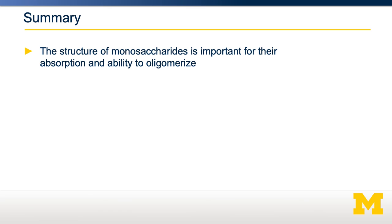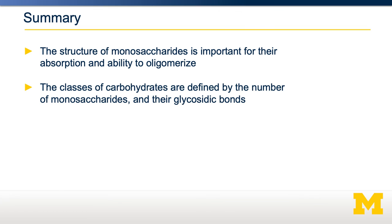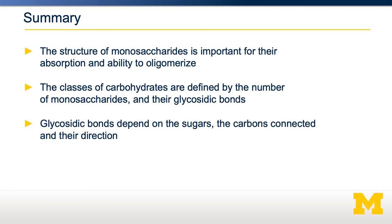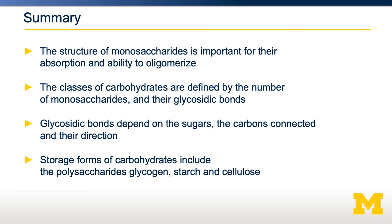In summary, understanding the structure of monosaccharides is important for understanding their absorption and their ability to oligomerize. The classes of carbohydrates are defined by the number of monosaccharides and their glycosidic bonds. The glycosidic bond depends on the sugars connected, the carbons, and the direction of the hydroxyl groups. The storage forms of carbohydrates important for human nutrition—glycogen, starch, and cellulose—are defined by their different linkages of glucose.